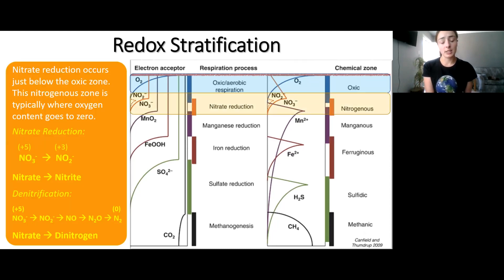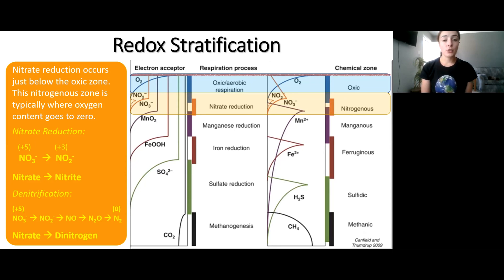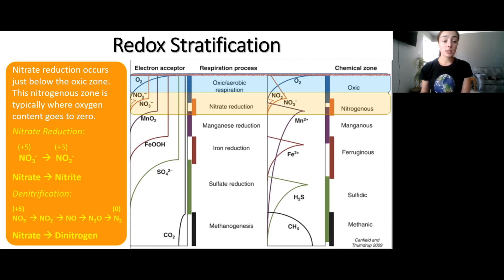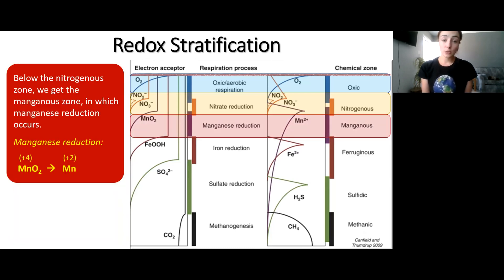Then you have nitrate reduction, which is the next zone. During nitrate reduction, nitrate NO₃⁻ goes to nitrite NO₂⁻, causing the nitrogen in these compounds to go from a plus five oxidation state to a plus three oxidation state. You can also have denitrification, which starts with the simple step of nitrate reduction but then goes further to completely denitrify the nitrate, forming back into dinitrogen or atmospheric nitrogen released back into the atmosphere for nitrogen-fixing bacteria — causing nitrogen to go from a plus five to a zero oxidation state. Below the nitrogenous zone, you have the manganous zone where manganese is reduced from a plus four to a plus two oxidation state.